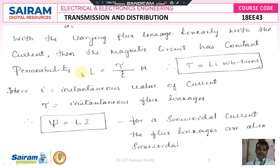ψ means Nφ. That means LI is equal to Nφ, or LI is equal to Nψ. Therefore L is equal to ψ divided by I, that is L equals ψ by I Henry. Therefore ψ is equal to LI Weber per turn, where I is the instantaneous value of current flowing through the conductor and ψ is the instantaneous flux linkage from one conductor to another. Therefore ψ equals LI, or Nφ equals LI.